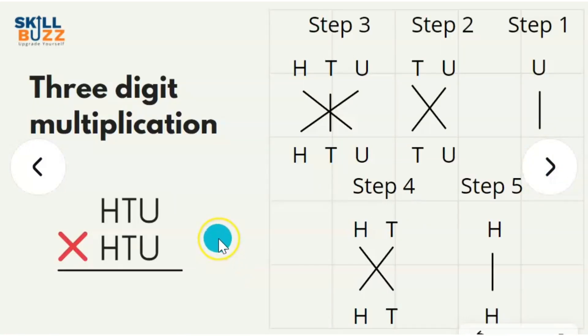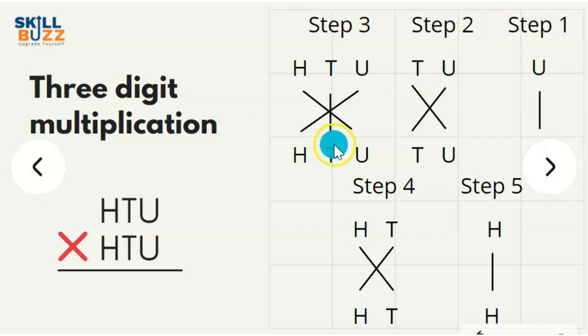Next, we will learn three-digit multiplication. Three-digit multiplication has five steps. If you notice the pattern and try to practice, we will try to do two-digit multiplication on the right-hand side first, then two-digits cross and plus. Third step is three-digits.